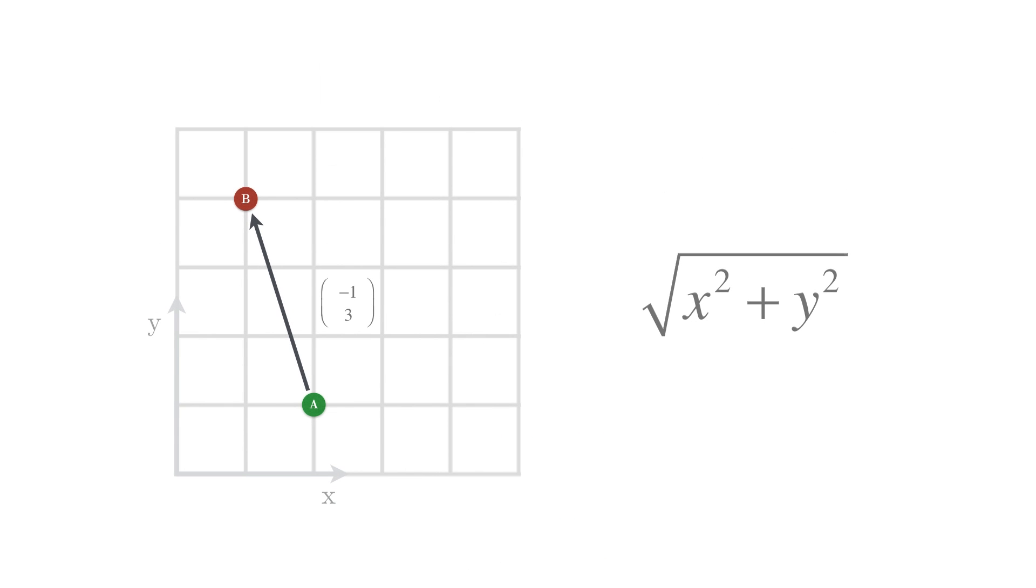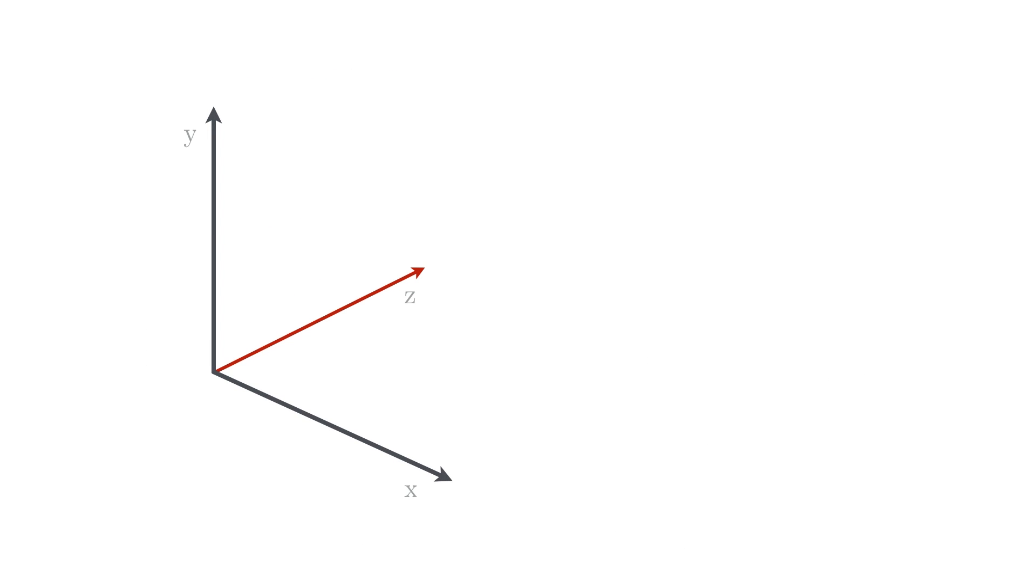So if we want to calculate the distance between our players, we simply insert the x and y coordinates of the vector into the formula, and voila! The distance from player A to player B is 3.16 units. The same thing is extremely easy to do in three dimensions as well. All the vectors now simply have a third component, the z-axis, which is also added into the formula.